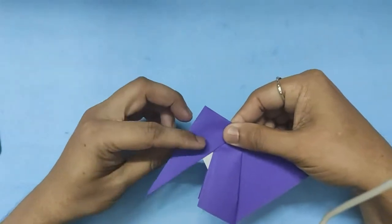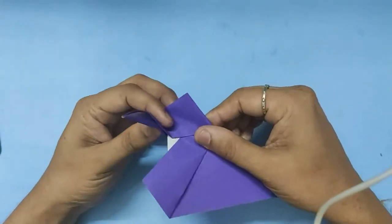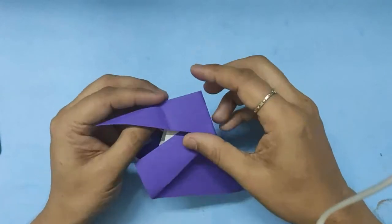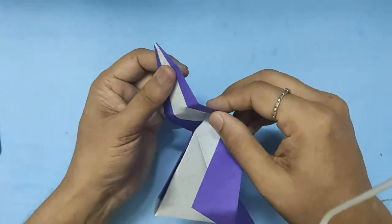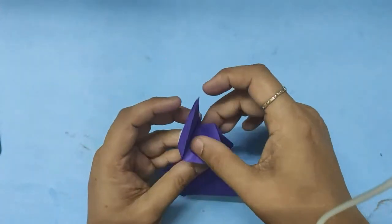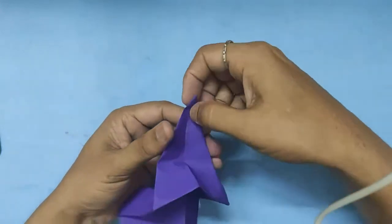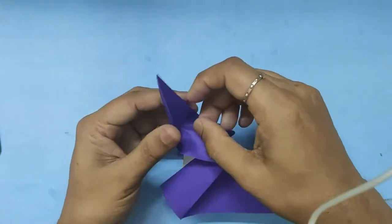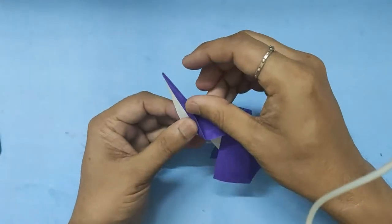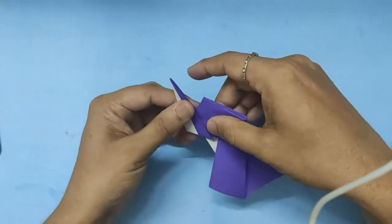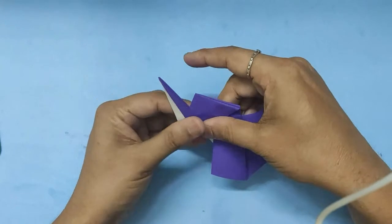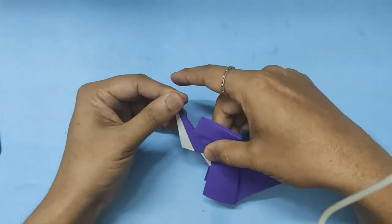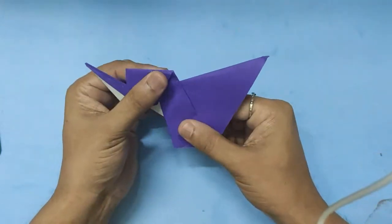Now we do the same thing, a reverse fold again. Fold that there and lift it up and press it down there, forming a reverse fold like that. You can see the elephant taking shape already.